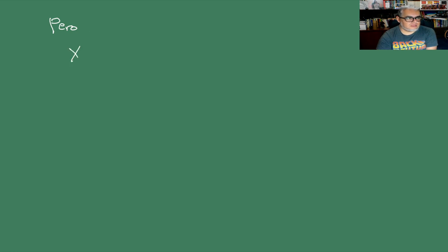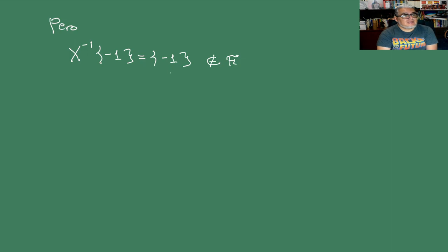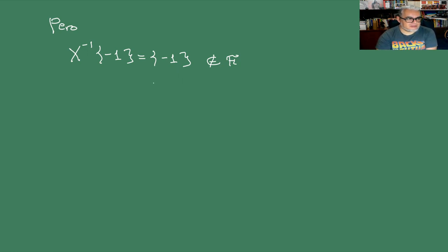Pero X no es variable aleatoria. Por ejemplo, X⁻¹({-1}) — la preimagen del boreliano que contiene solamente al -1 — es exactamente {-1}, y este conjunto no es un elemento de nuestra sigma-álgebra. Entonces: si el módulo de una función es variable aleatoria, no necesariamente la función es variable aleatoria. Al revés sí, que fue lo que probamos la vez anterior.